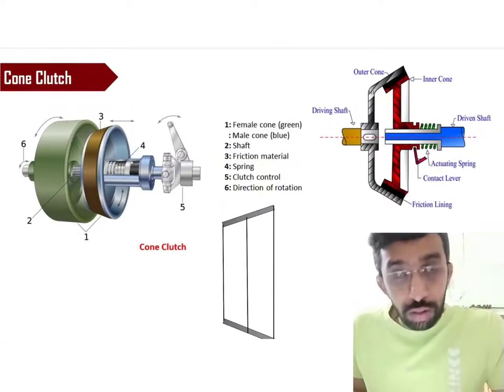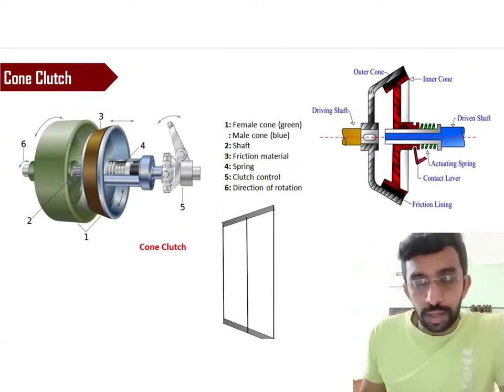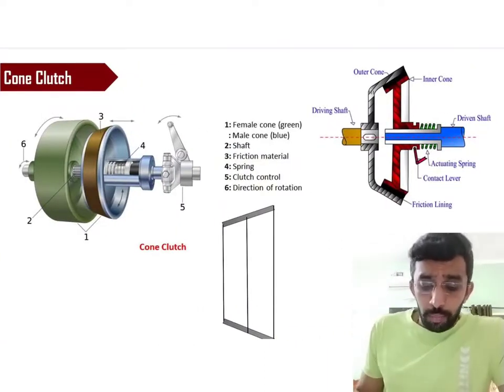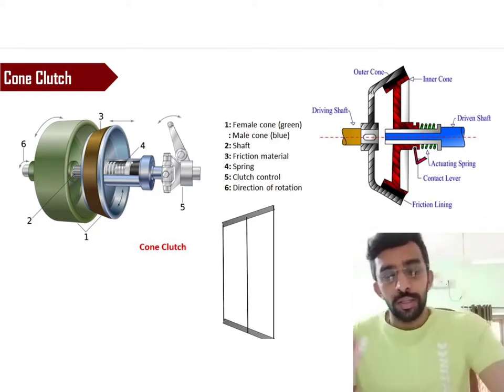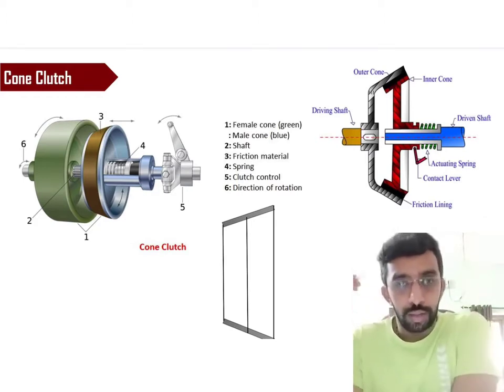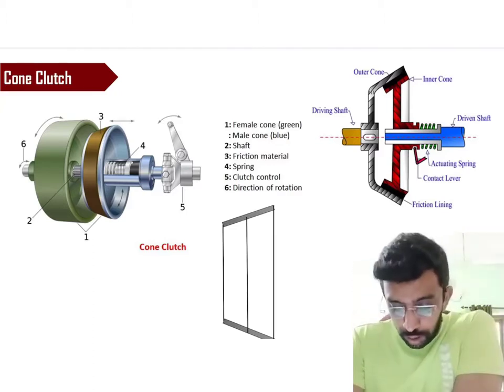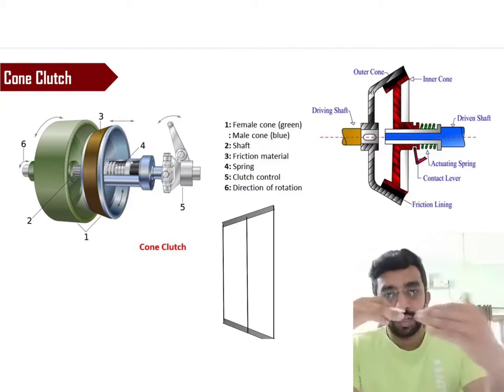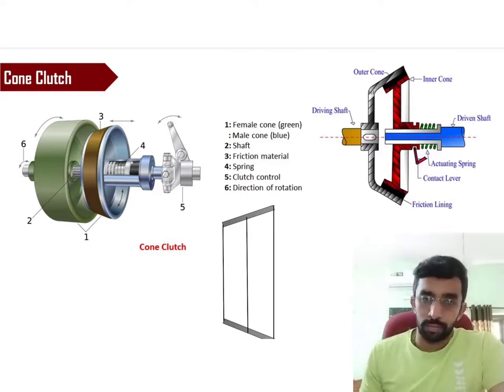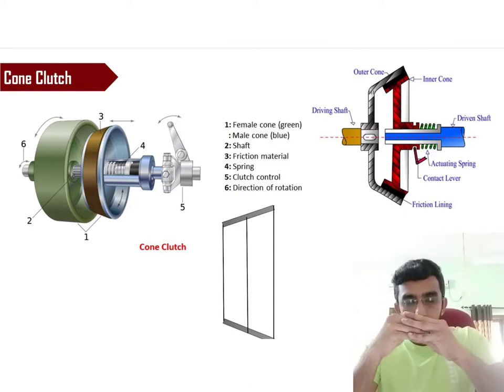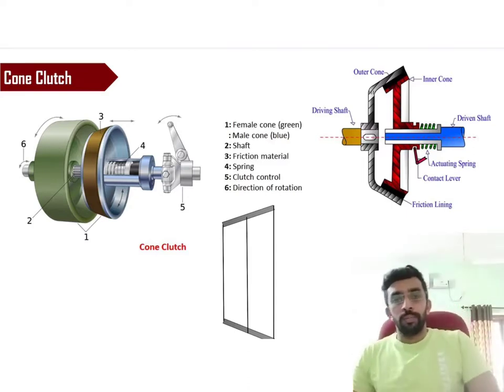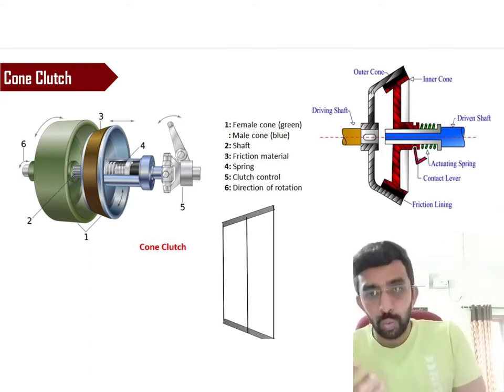As we have discussed, cone clutches consist of a male cone as well as a female cone. Male cone is represented here in blue color and the green one is called the female cone. What happens is that we have a friction material lined on the surface of the male cone. When the male cone goes into the female cone, then caging happens and the speed of both these parts will become similar, equal to one another.